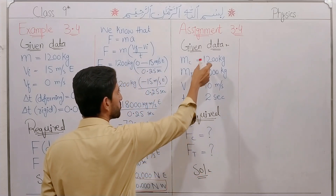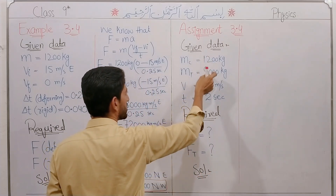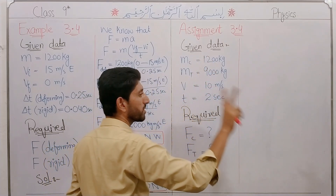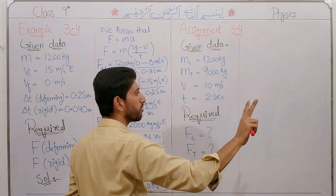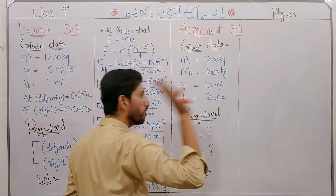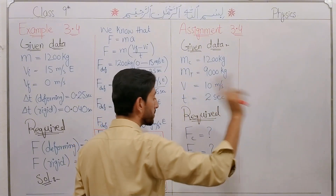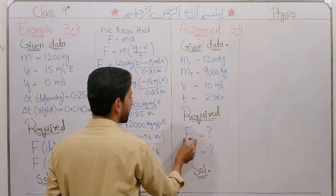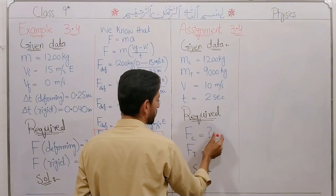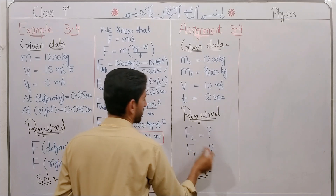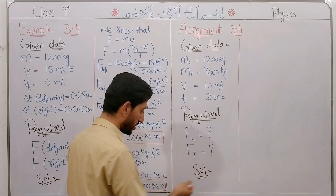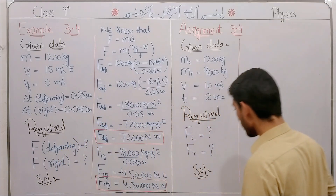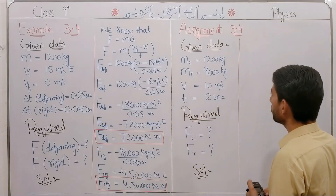The motor car and truck have the same velocity. One stops in 2 seconds. We need to find the force on the car and the force on the truck for each stopping time. We will solve both.